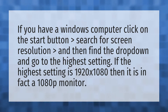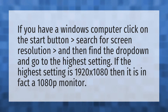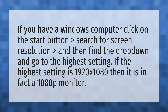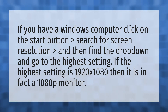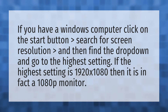If you have a Windows computer, click on the Start button, search for screen resolution, find the drop-down, and go to the highest setting. If the highest setting is 1920 by 1080, then it is in fact a 1080p monitor.